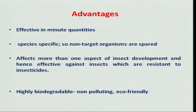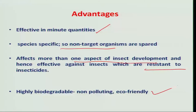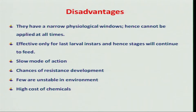These insect growth regulators have their own advantages and can fit well in integrated pest management programs. Since their requirement is very small, we load the environment with less pesticide. They are somewhat specific, so non-target natural enemies are spared. Their mode of action targets more than one stage — eggs, larvae, and to some extent pupae — so resistance development to conventional insecticides can be avoided.